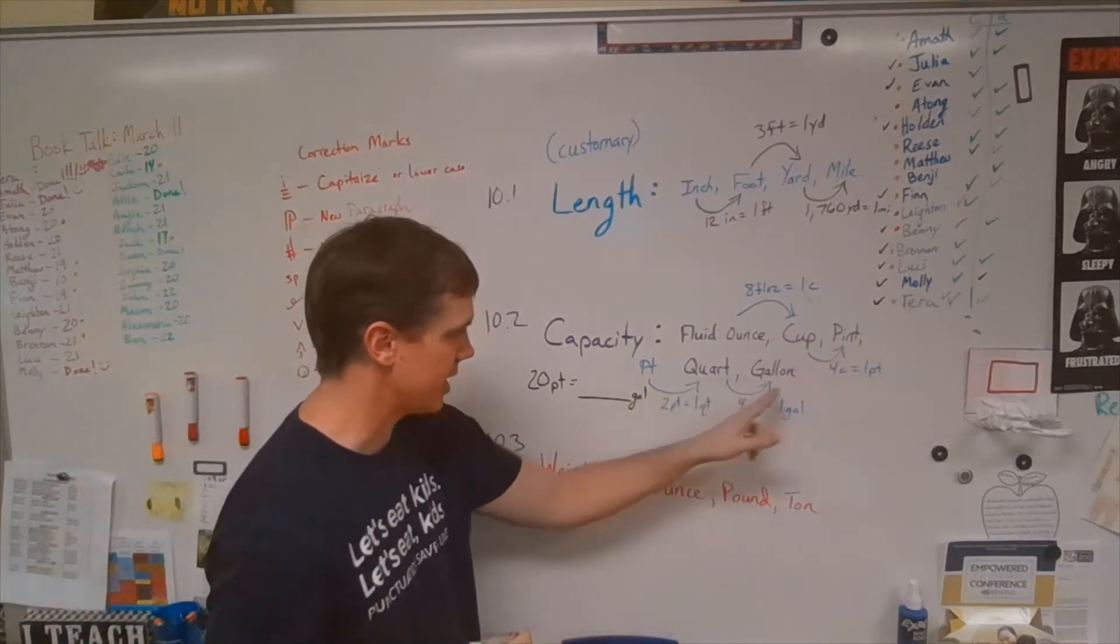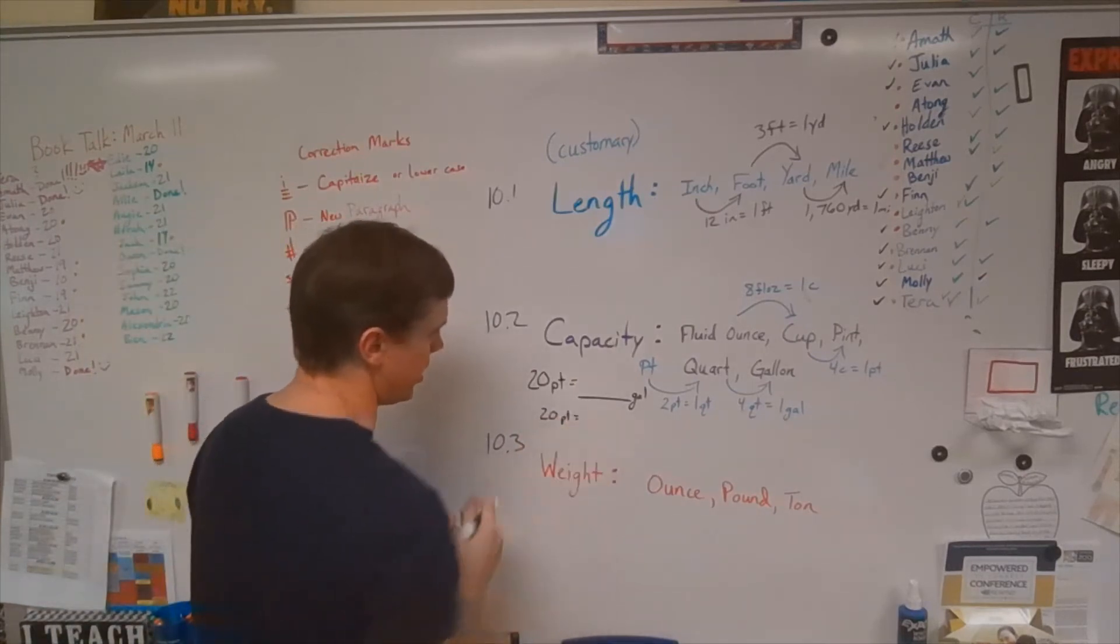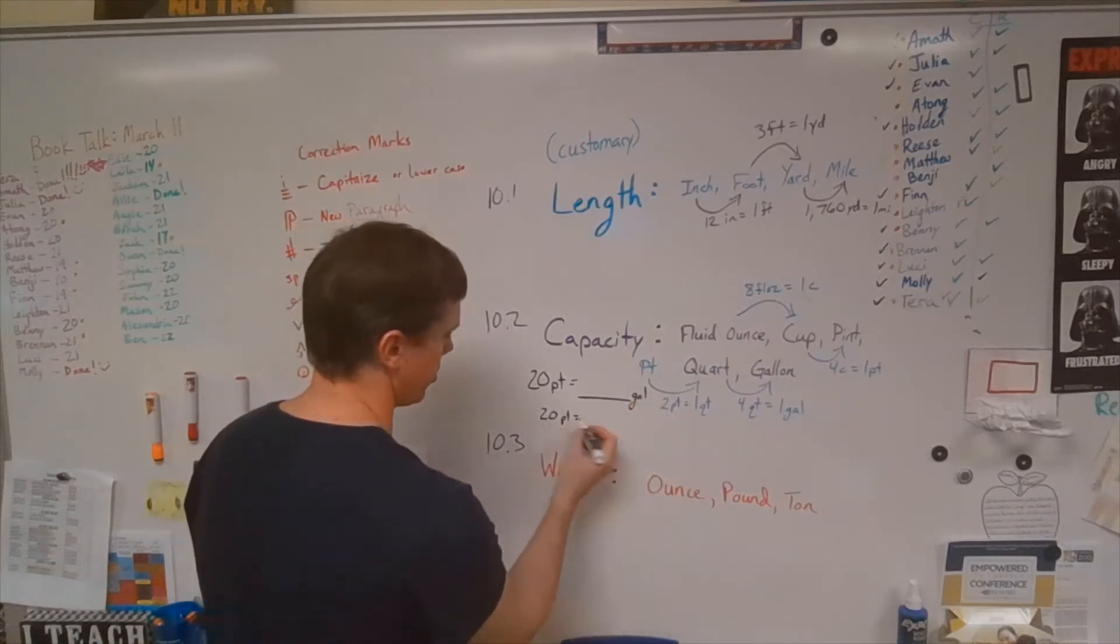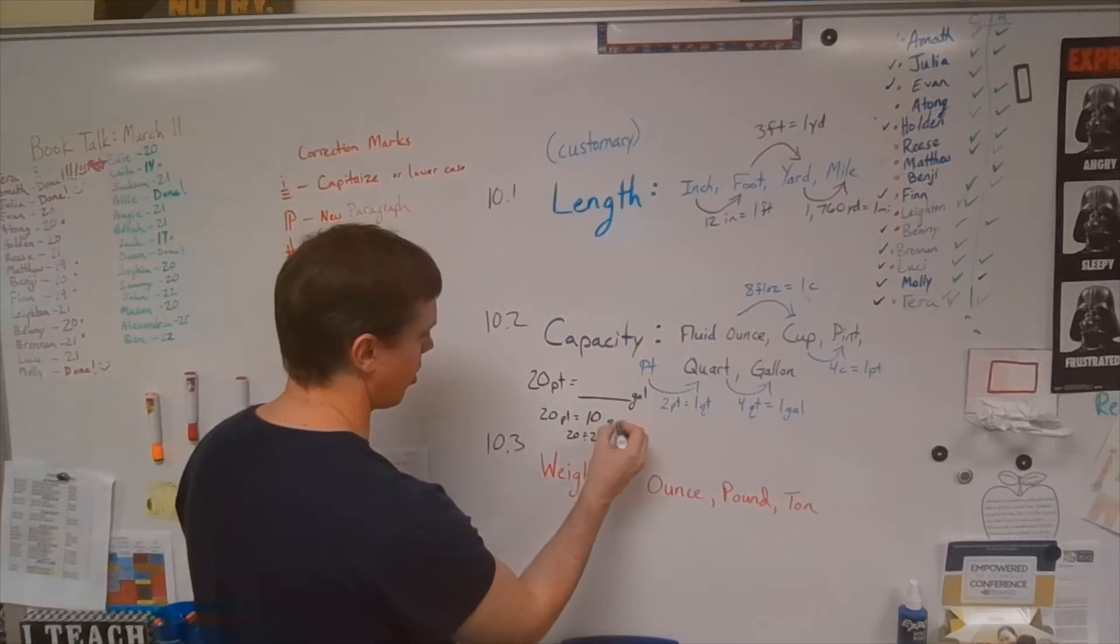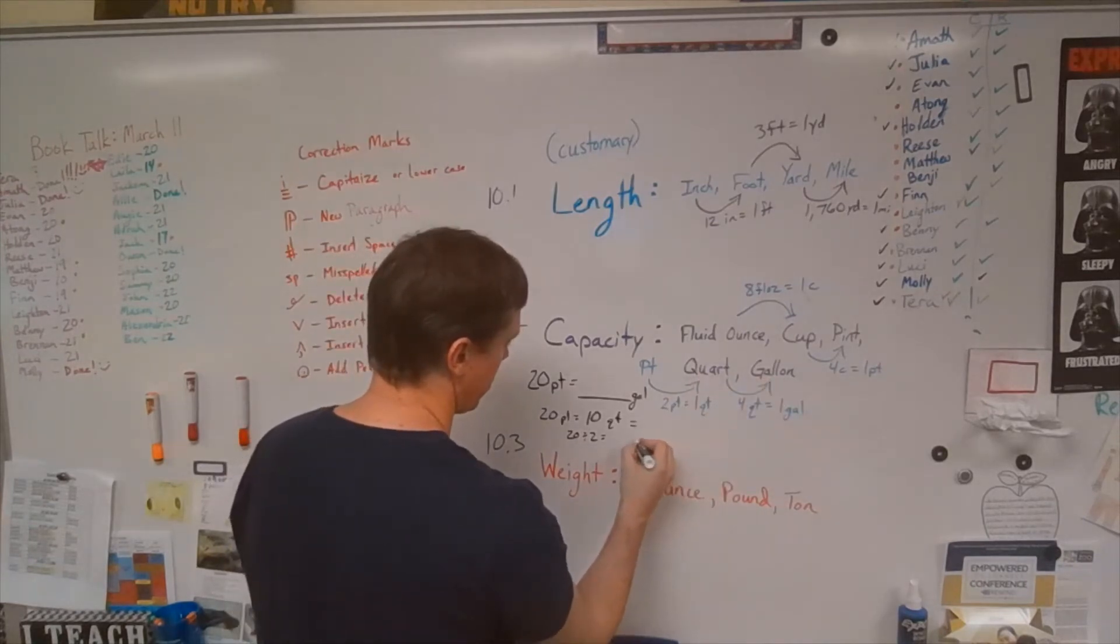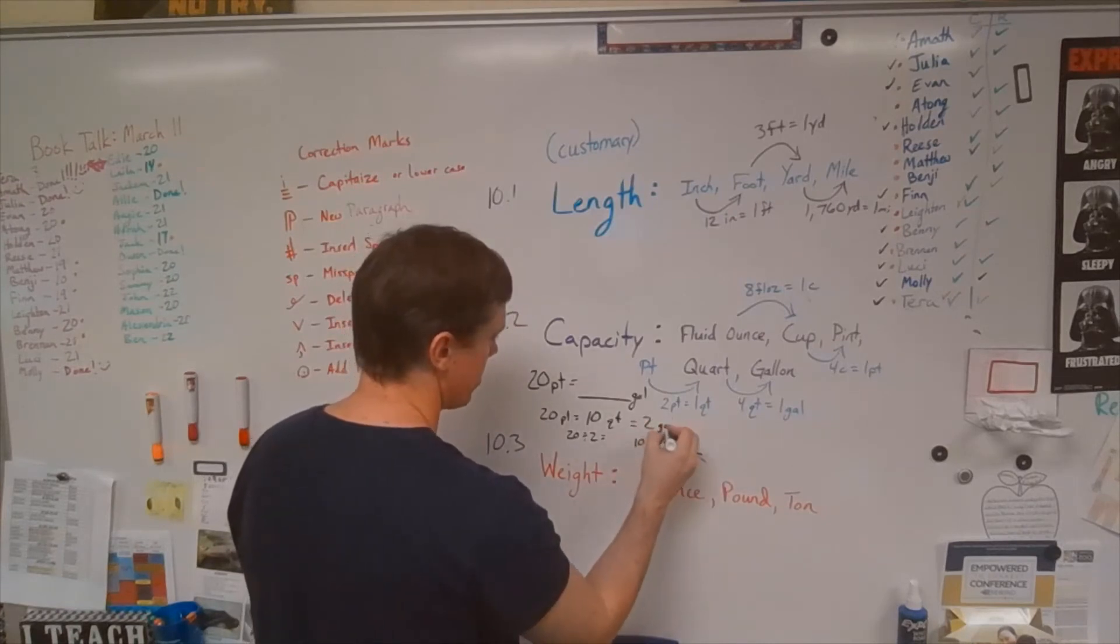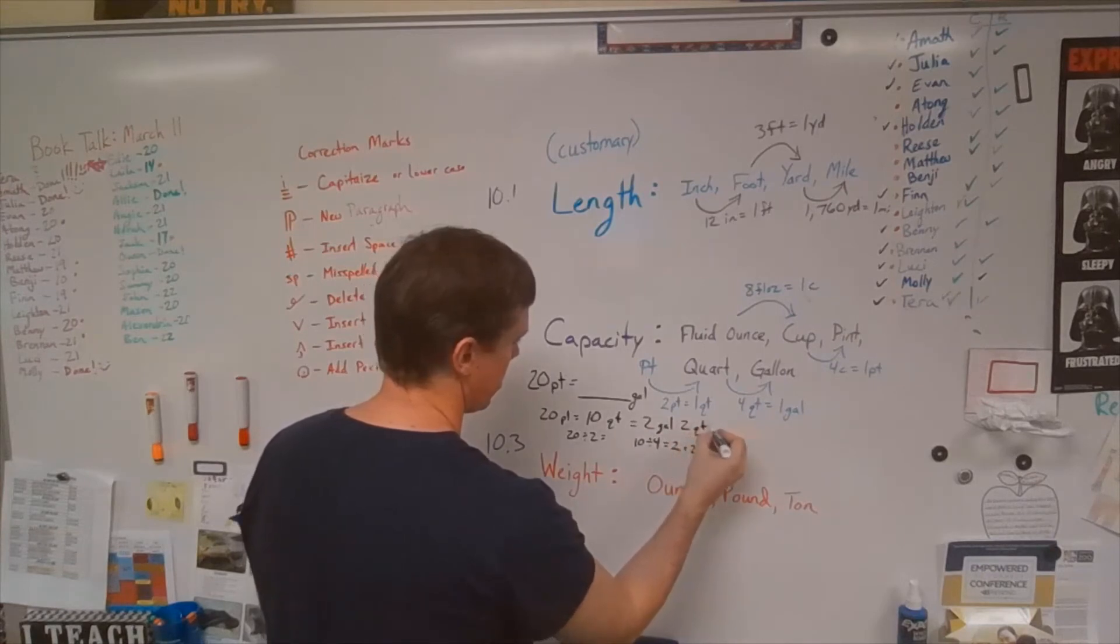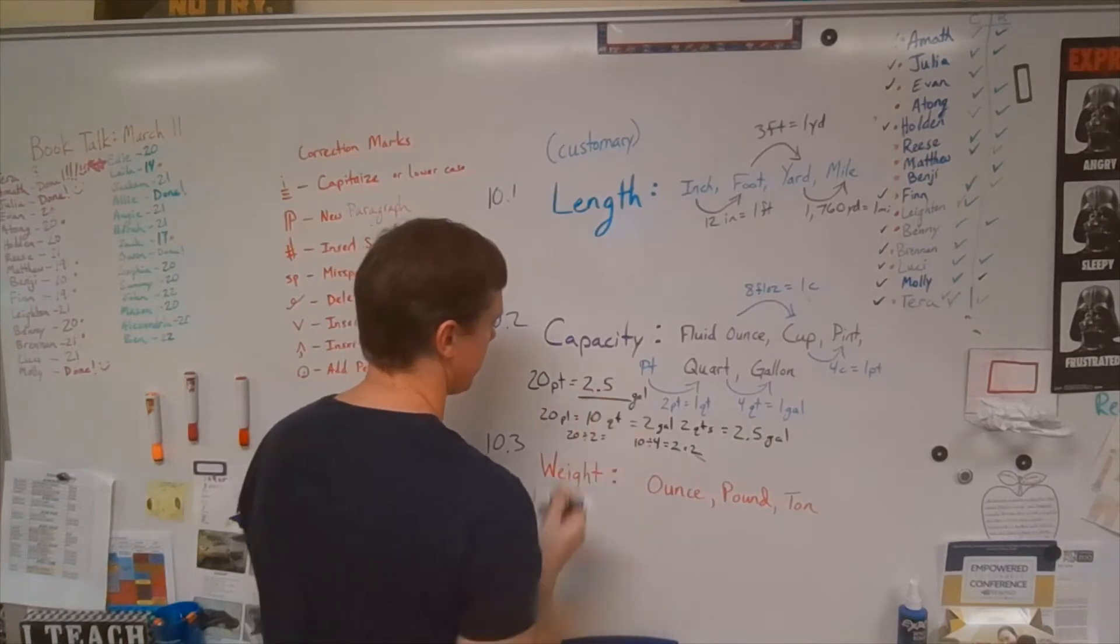So what we could do is take a middle step here. 20 pints is equal to how many quarts? Well, we know that there's two pints per quart. So 20 pints, we're going to do 20 divided by two, and that's going to be 10 quarts. Okay. And then for quarts, we could say, okay, well, we have 10 quarts to go to gallons. We're going to divide by four. So this is going to be 10 divided by four, which is going to be two with a remainder of two. Ooh, terrible. The remainder of two. So that means that we have two gallons and we have two quarts left over. Or you could also maybe even just say, 2.5 or two and one half gallons. All right. So this is going to be two, we'll just say 0.5.